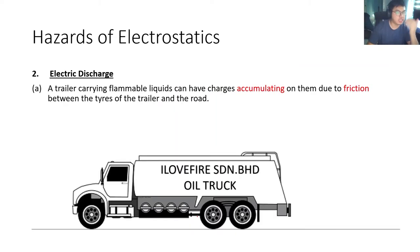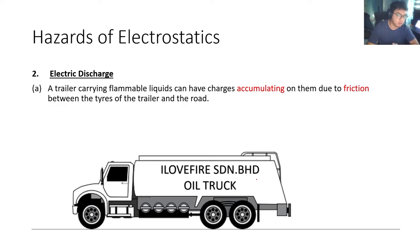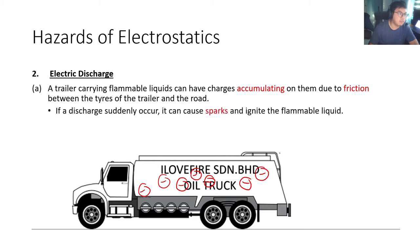Another example where electric discharge can be dangerous is when you have a truck carrying oil or flammable substances. A trailer carrying flammable liquids can have charges accumulating on it due to friction between the tires and the road. The tires are rubbing against the road, the gears are rubbing against each other — there's a lot of friction, so there can be a lot of charge built up inside the truck. If a discharge suddenly occurs, it can cause a spark and ignite the flammable liquid, causing an explosion.